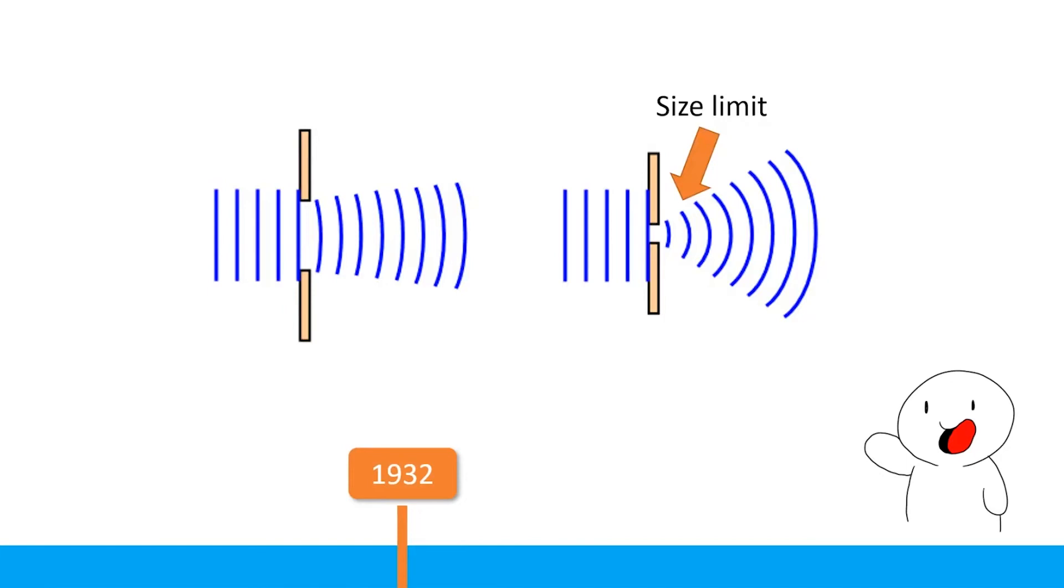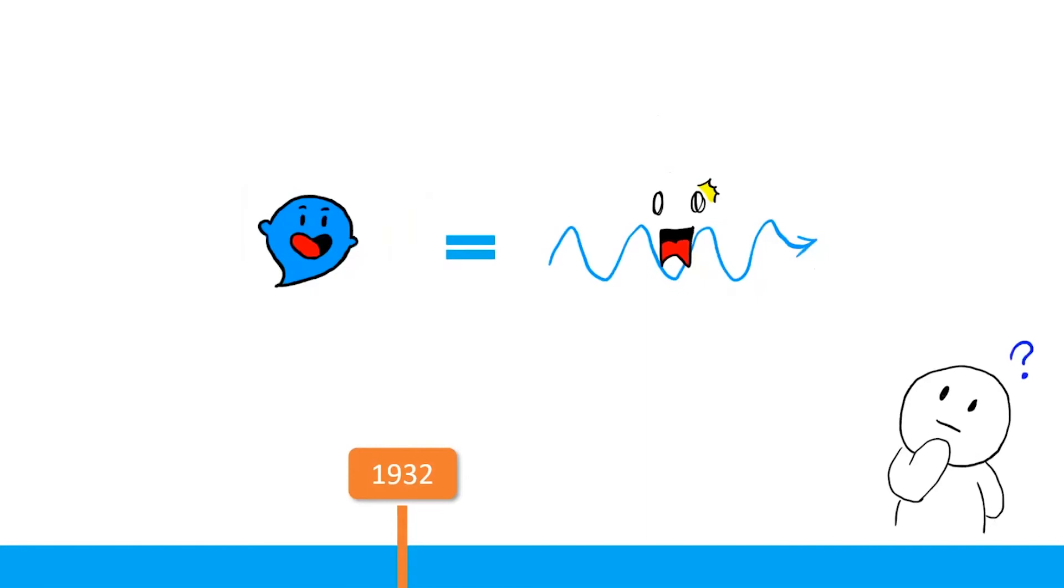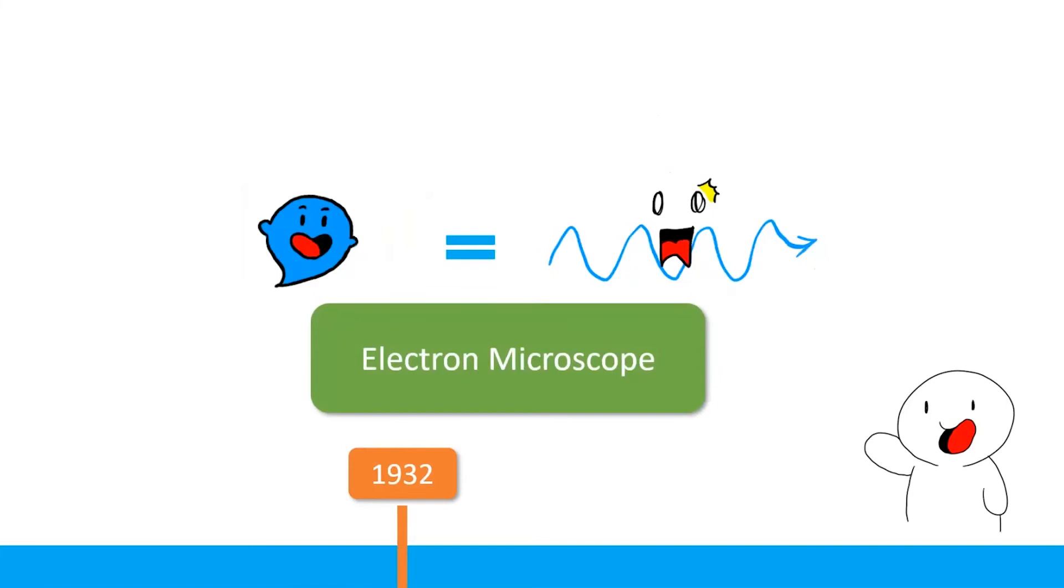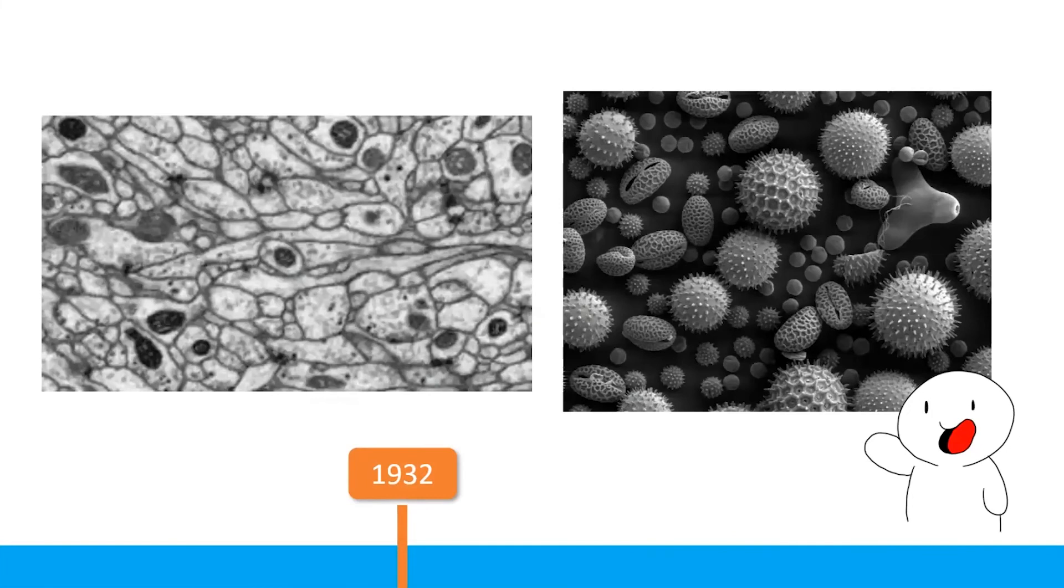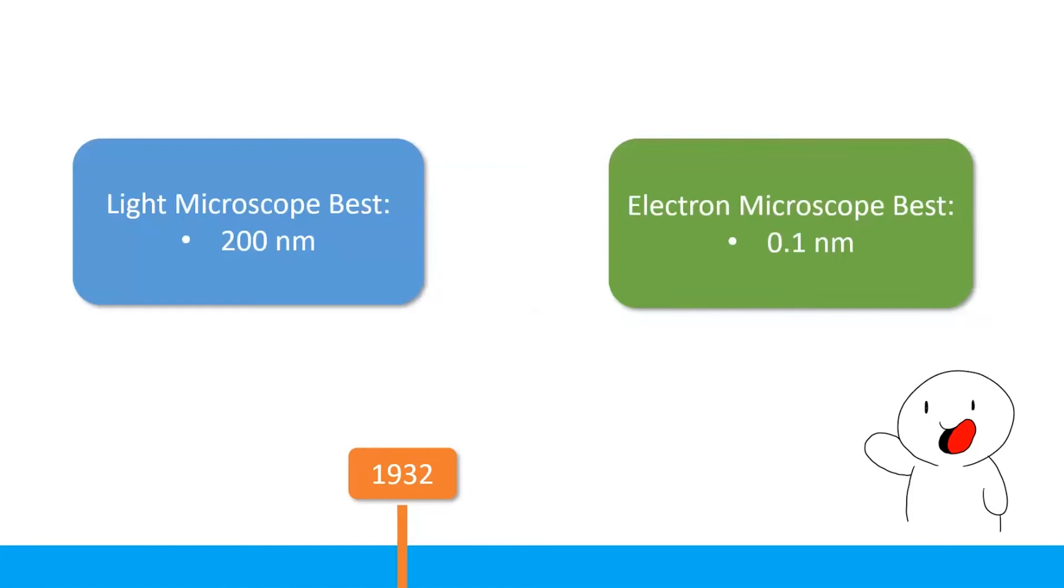Then you remember about wave-particle duality. Since electrons are waves, why not we build a microscope using electrons? And so the first electron microscope is born in the year 1932, invented by Ernst Ruska and Max Knoll. What is so good about this electron microscope anyway? Turns out electrons have a much shorter wavelength than light, and it allows us to look at things smaller than an optical microscope can. To compare the performance of optical microscope with electron microscope, the best optical microscope can see up to 200 nanometers, but the best electron microscope can see up to 0.1 nanometers.